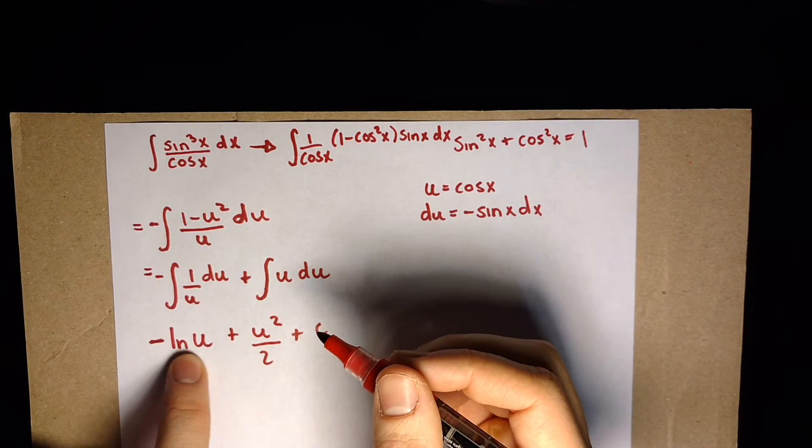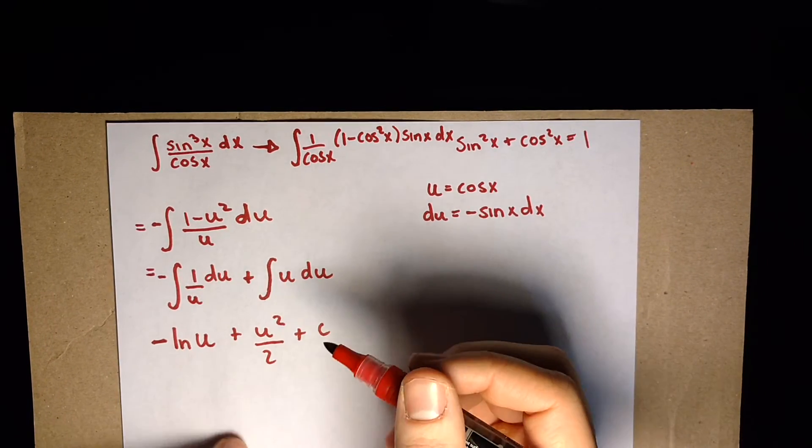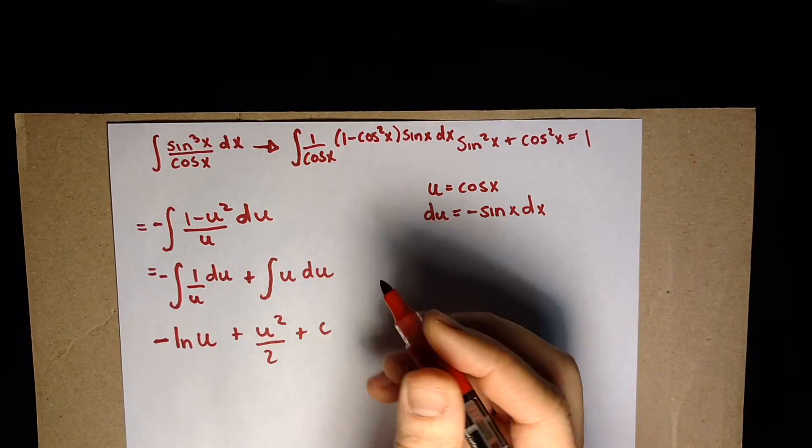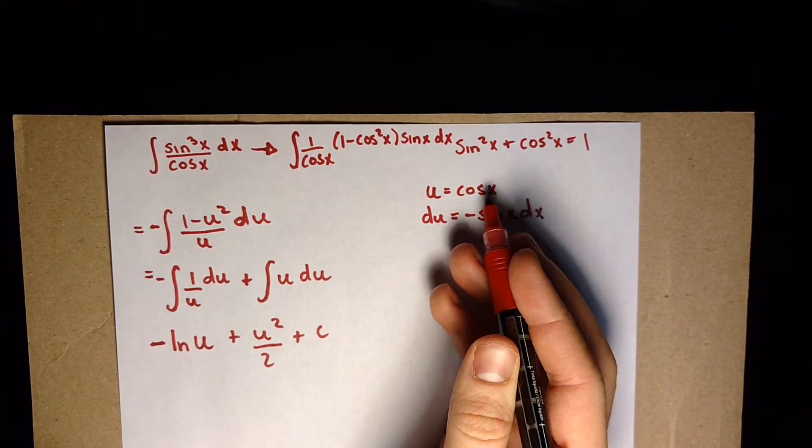And of course we know negative ln u is just ln of 1 over u. So when we plug in cosine of x back in for u...